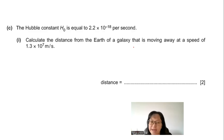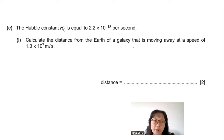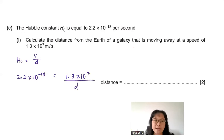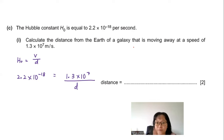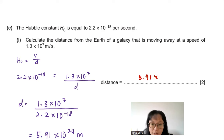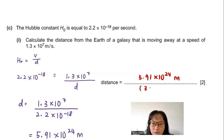Part C: Using the Hubble constant H₀ = 2.2 × 10⁻¹⁸ per second, calculate the distance from Earth of a galaxy moving away at 1.3 × 10⁷ m/s. Using Hubble's law H₀ = v/D, rearranging gives D = v/H₀ = 1.3 × 10⁷ ÷ 2.2 × 10⁻¹⁸ = 5.91 × 10²⁴ m, or 5.9 × 10²⁴ m.